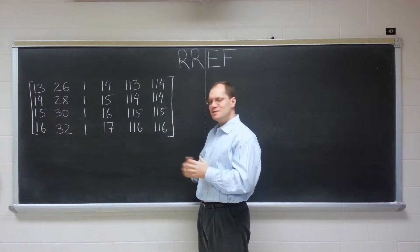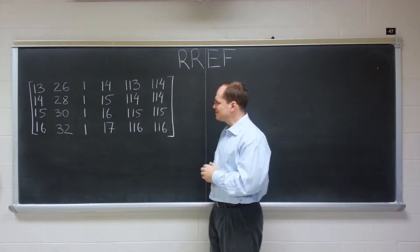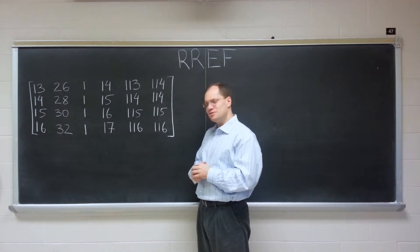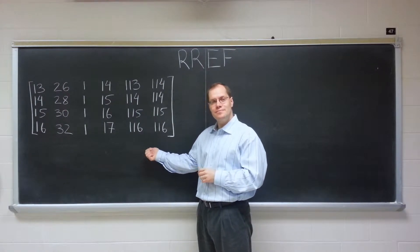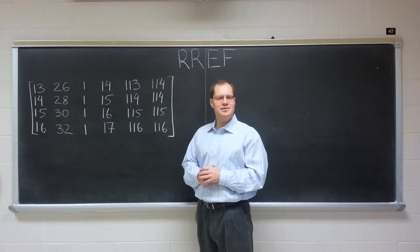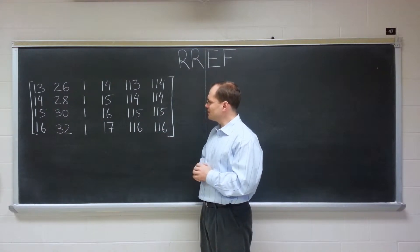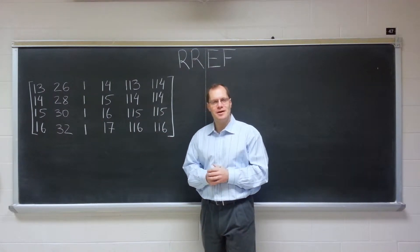Yet the row reduced echelon form of this matrix is very easy to see. So while I keep talking, if you're not interested in what I'm saying, just look at the matrix and try to determine its row reduced echelon form without firing a single shot, without doing any Gauss elimination. It's possible.